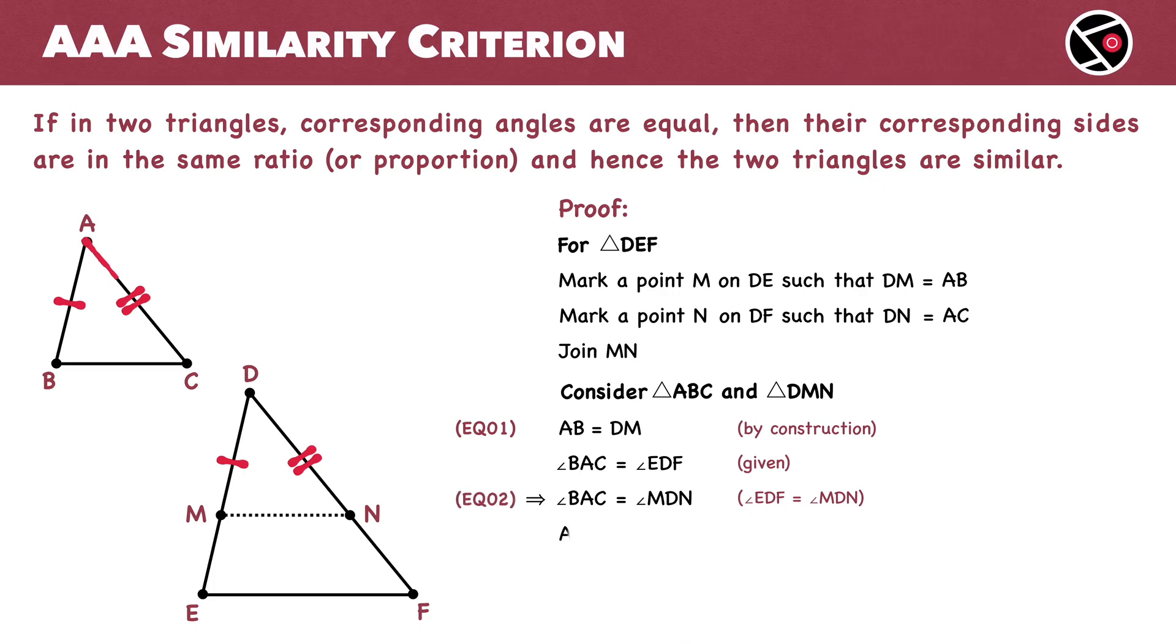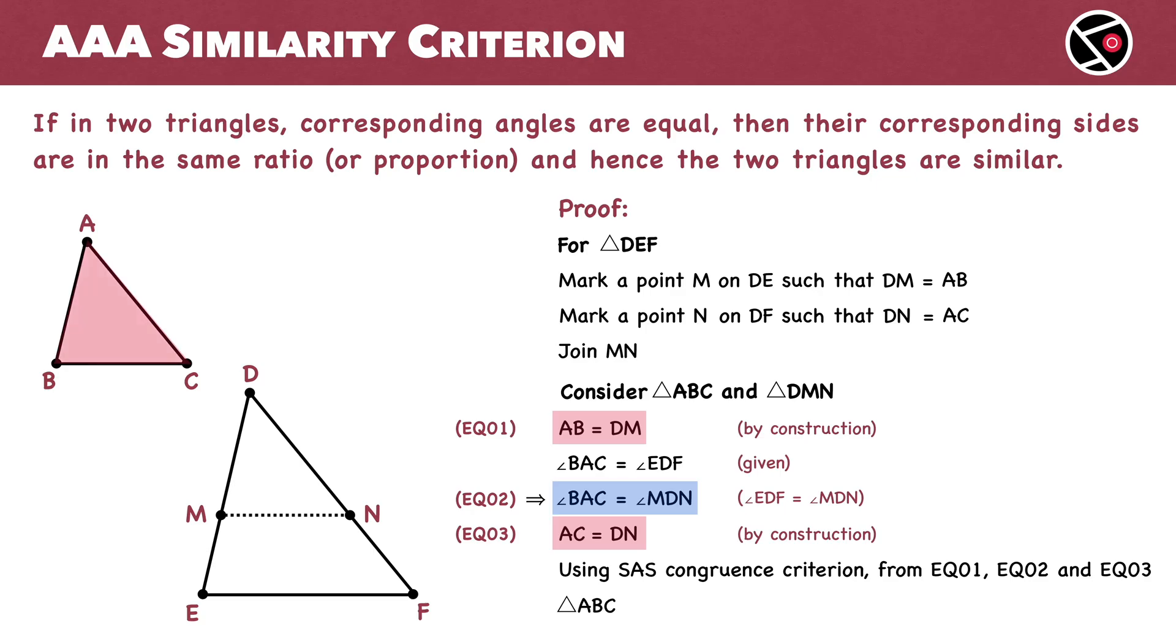Finally, AC equals DN—Equation 3. For these two triangles, we have two pairs of equal corresponding sides, and the included angles are also equal. So, by the SAS criterion for congruence, triangle ABC is congruent to triangle DMN.